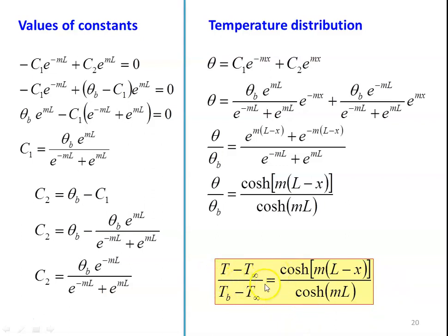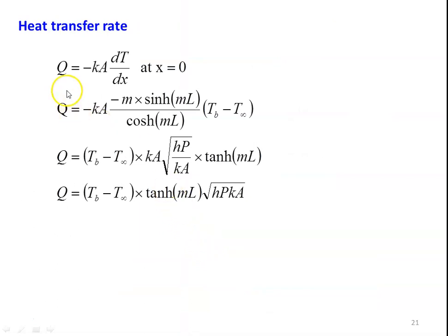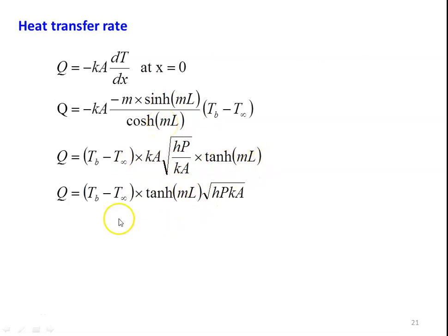The significance of this equation: once you know the value of x, you can find out the unknown temperature T for any given position along the fin. The rate of heat transfer Q equal to minus KA dT by dx at x equal to 0. Differentiating and substituting x equal to 0 gives the heat transfer equation: Q equal to (Tb minus T infinity) into KA into square root of Hp by KA into tanh ml, which simplifies to Q equal to (Tb minus T infinity) into square root of HpKA into tanh ml.